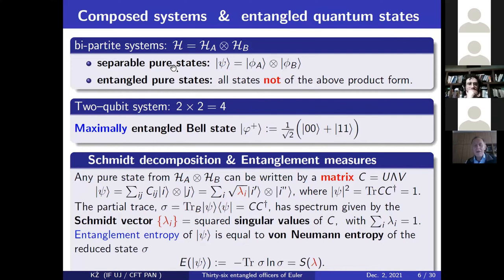To remind you some simple definitions, if we have bipartite system, separable pure states are just of this tensor product structure, entangled are not of this form. Simple case is the famous Bell state. We see it is not a product state. It's entangled. In fact, it's maximally entangled. Why? Because partial trace of the projector is maximally mixed. So technically, we can take any state and expand it in any product basis. So we have here this matrix of coefficients.